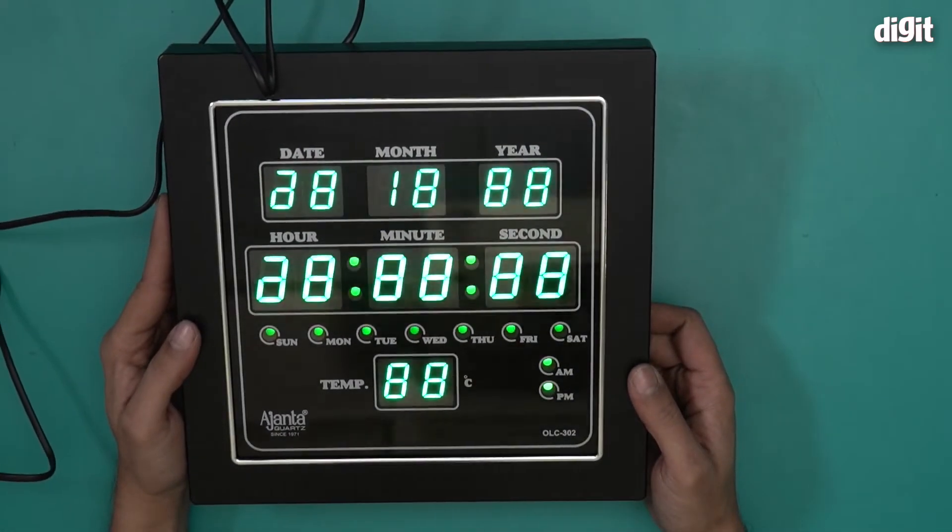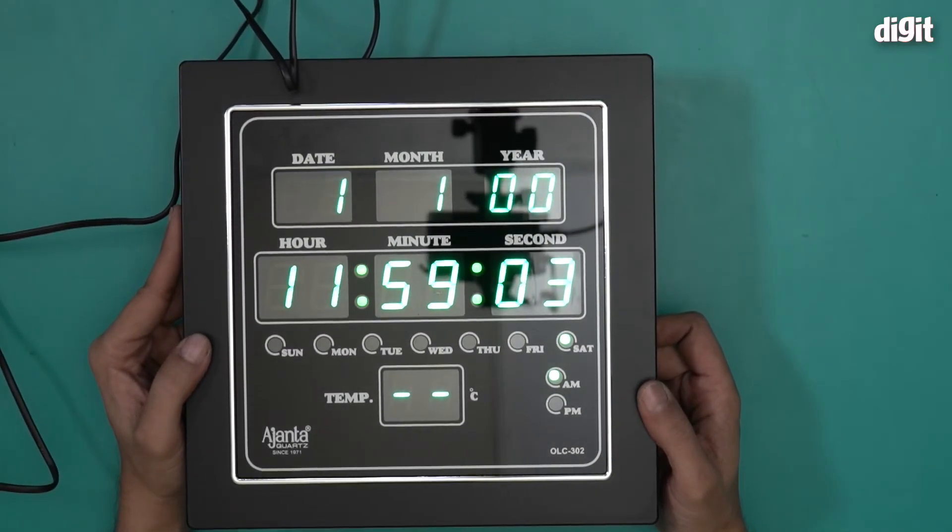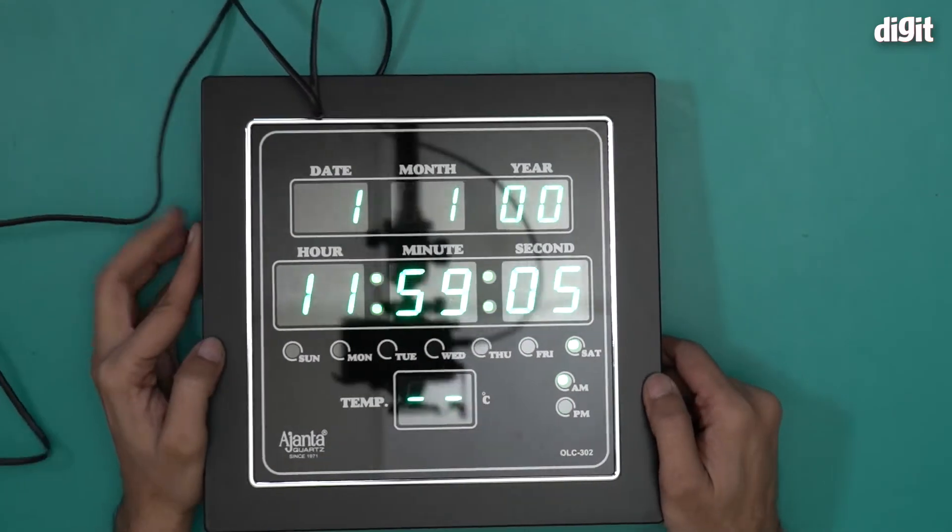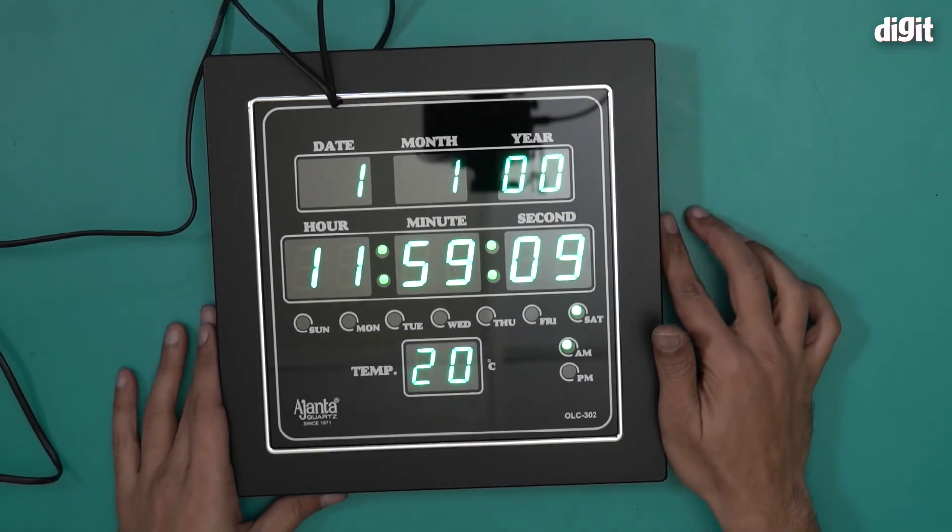You will obviously have to set this up now. It's showing default settings saying date month is 1st of January 2000, so that's not what it is of course, so you will have to set it up.